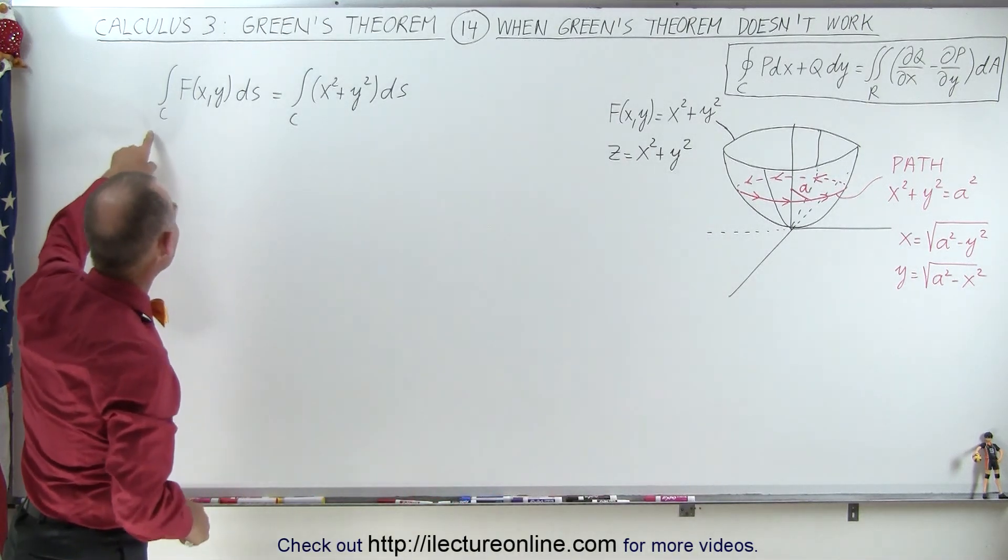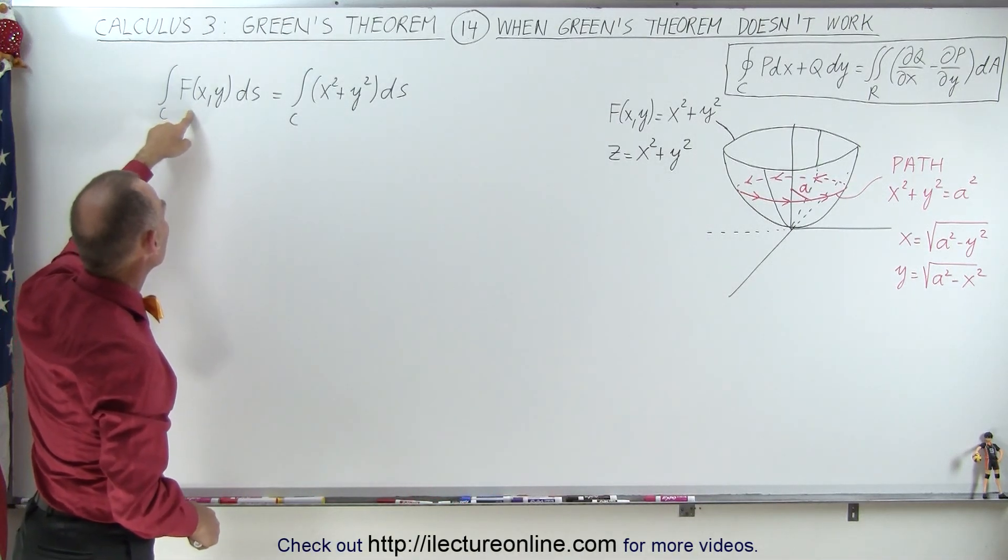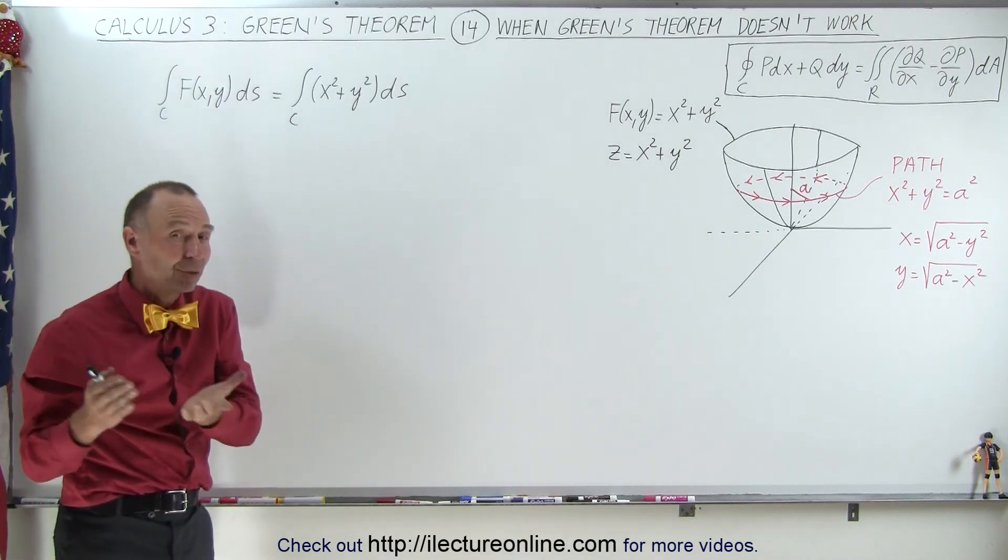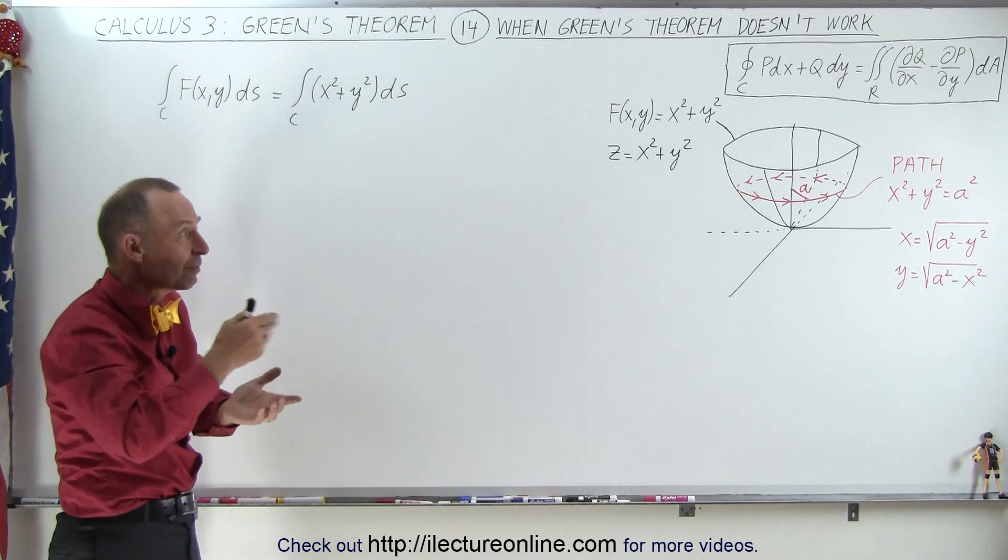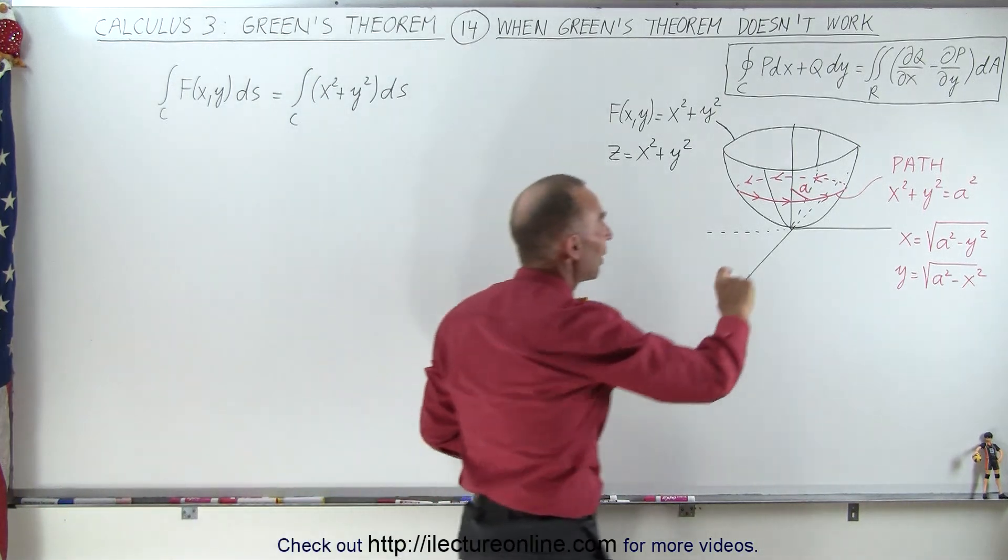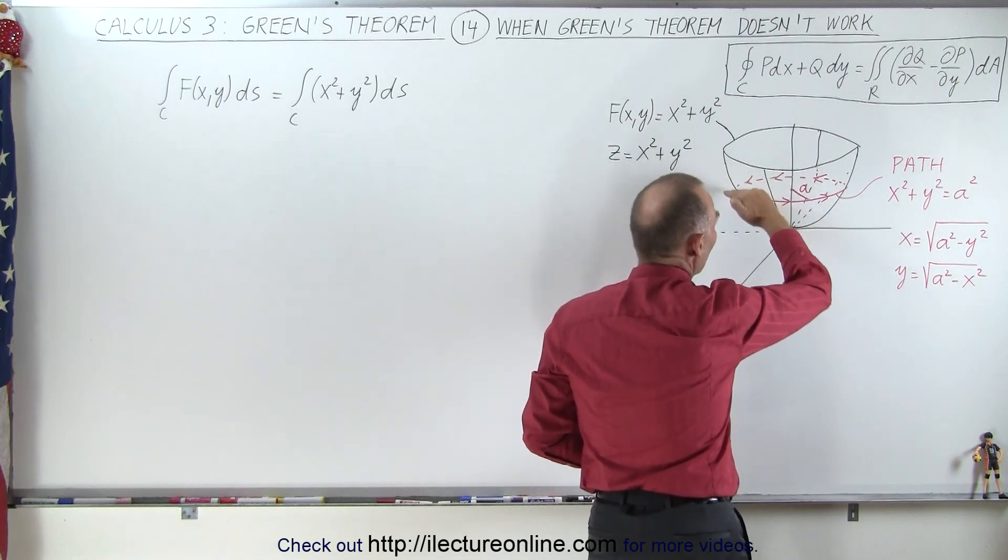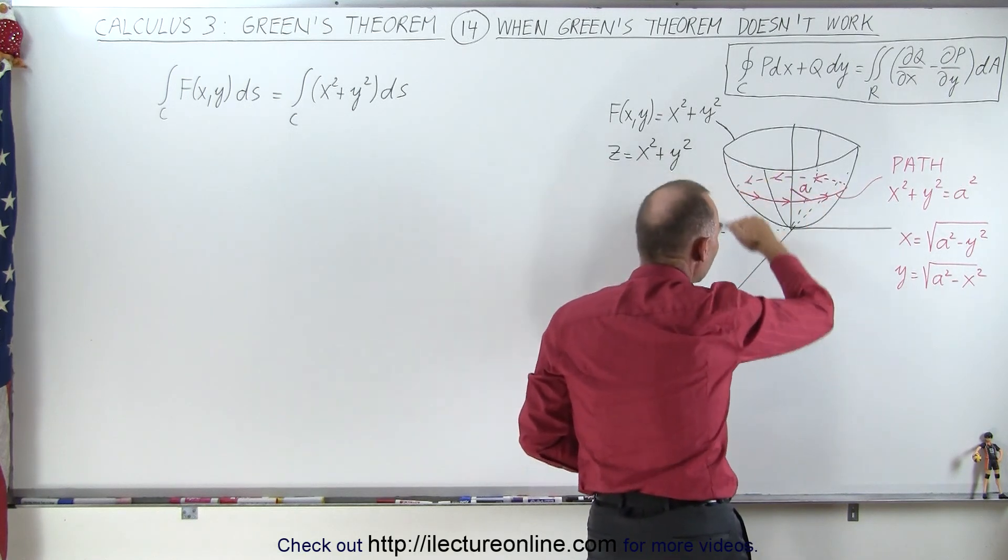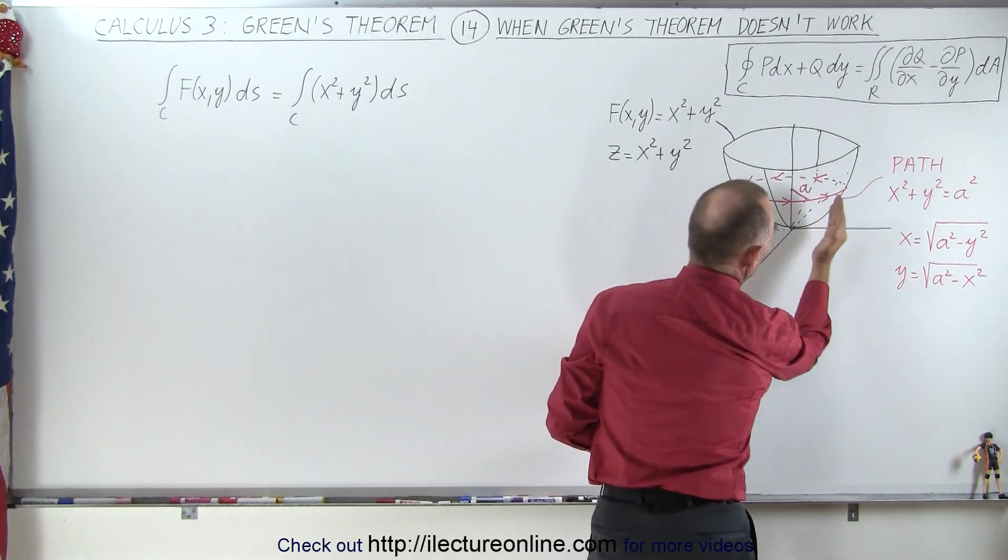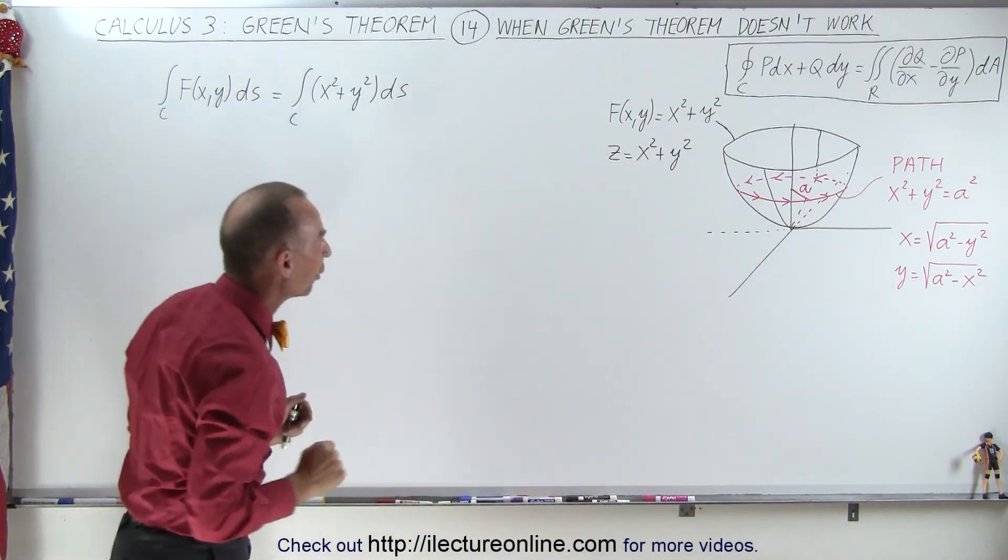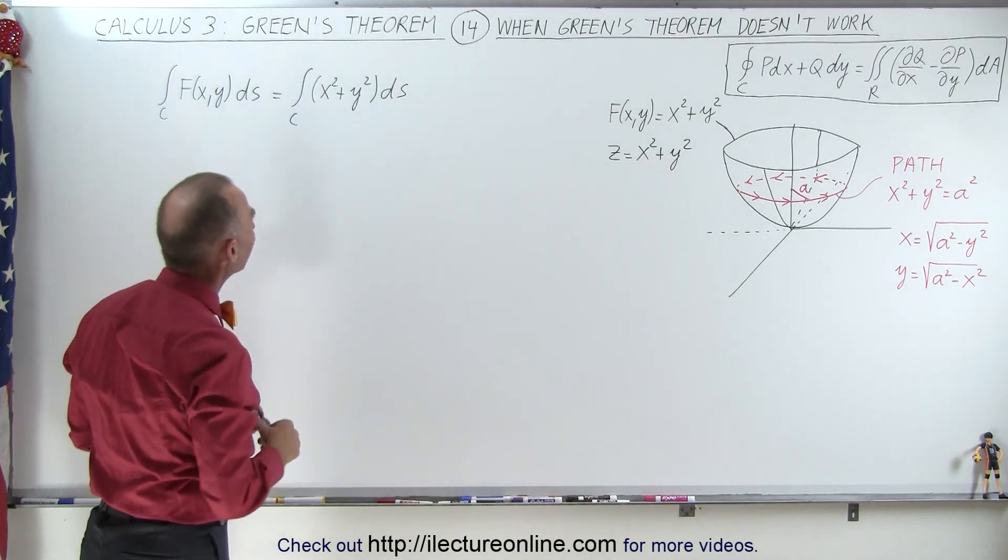Notice we can define x and y in that case by these particular equations. We're going to integrate the function times ds along that integral and see what we get. If you remember some of the videos from the previous playlist, that will represent the area underneath that path from where that path is down to the xy plane. So it would be like the area of the curtain hanging from that path along that paraboloid.